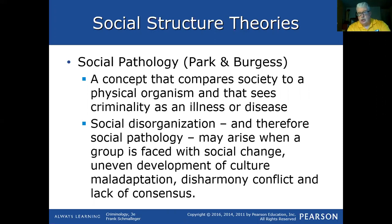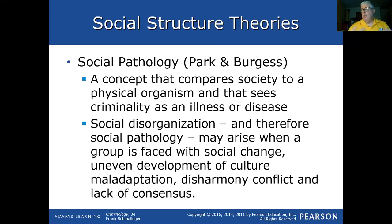Park and Burgess described social pathology as a concept that compares society to a physical organism and sees criminality as an illness or disease. You look at it like a body — the body's sick, maybe there's a cancer, we remove the cancer and the body gets better. Similarly, if we can fix the problems within a sick society, then crime is going to go away.